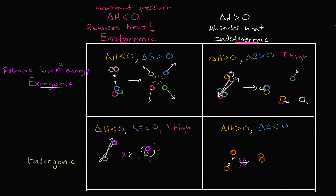And endergonic, by the same logic, is something that absorbs or uses work energy. One of the properties we can use to think about energy available for work is Gibbs free energy.